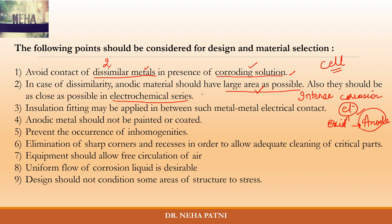The two dissimilar metals should also be as close as possible in the electrochemical series. In the galvanic or electrochemical series, a large gap between the metals creates a clear demarcation of anodic and cathodic areas. If they are close together in the series, the difference is minimized and it will not result in intense corrosion.